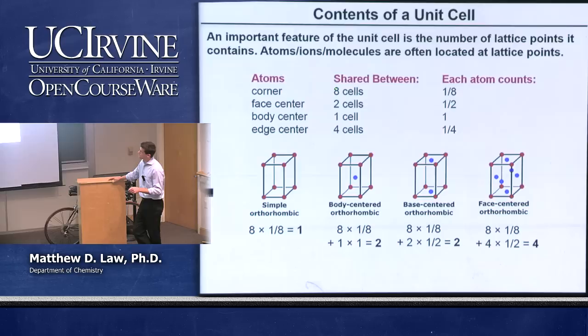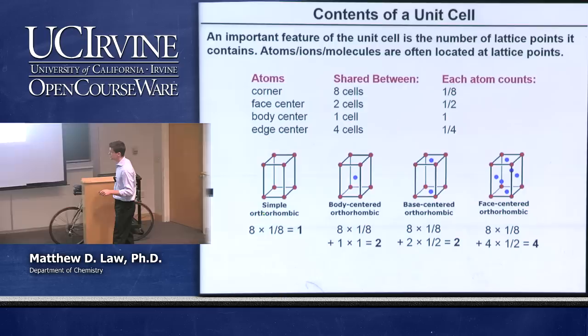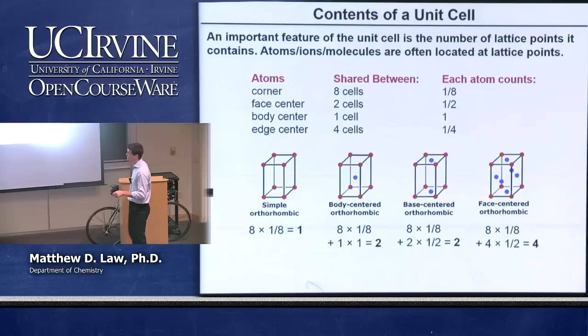For accounting unit cell contents: an atom at the corner counts as one-eighth (shared among eight cells), a face-center atom counts as one-half (shared between two cells), and an edge-center atom counts as one-fourth (shared among four cells). For the orthorhombic cases: simple = 1, body-centered = 2, base-centered = 2, face-centered = 4 lattice points per unit cell.